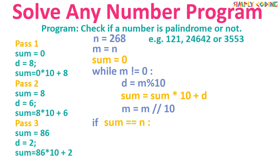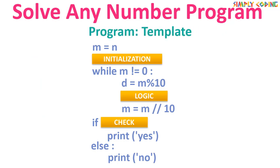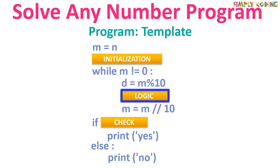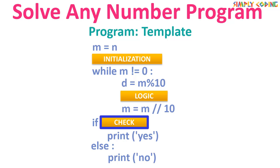If n equals the reverse sum, we print 'the number is palindrome'; else 'not a palindrome'. From these two programs a template is emerging: all number programs require some initialization, a loop to get individual digits with logic applied to each digit, and then a check section after the loop to determine the result.